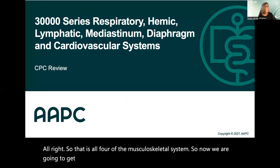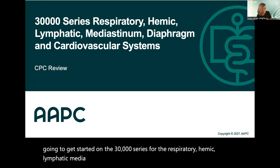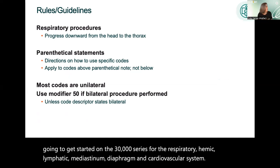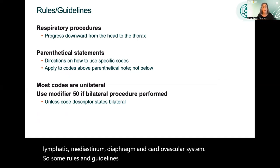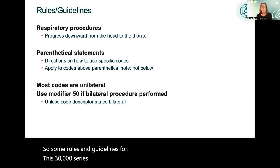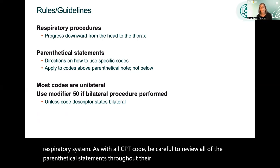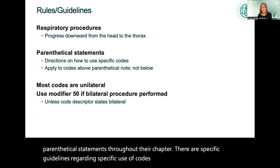Now we are going to get started on the 30,000 series for the respiratory, hemic, lymphatic, mediastinum, diaphragm, and cardiovascular system. Some overarching guidelines: as with all CPT codes, be careful to review all parenthetical statements throughout the chapter, as there are specific guidelines regarding the specific use of codes.